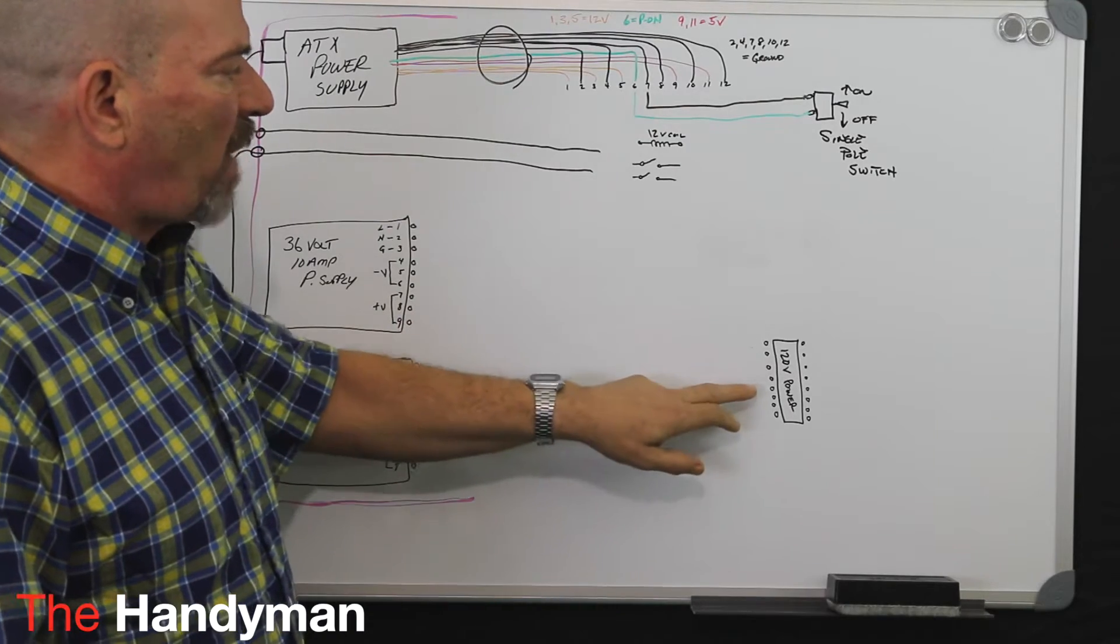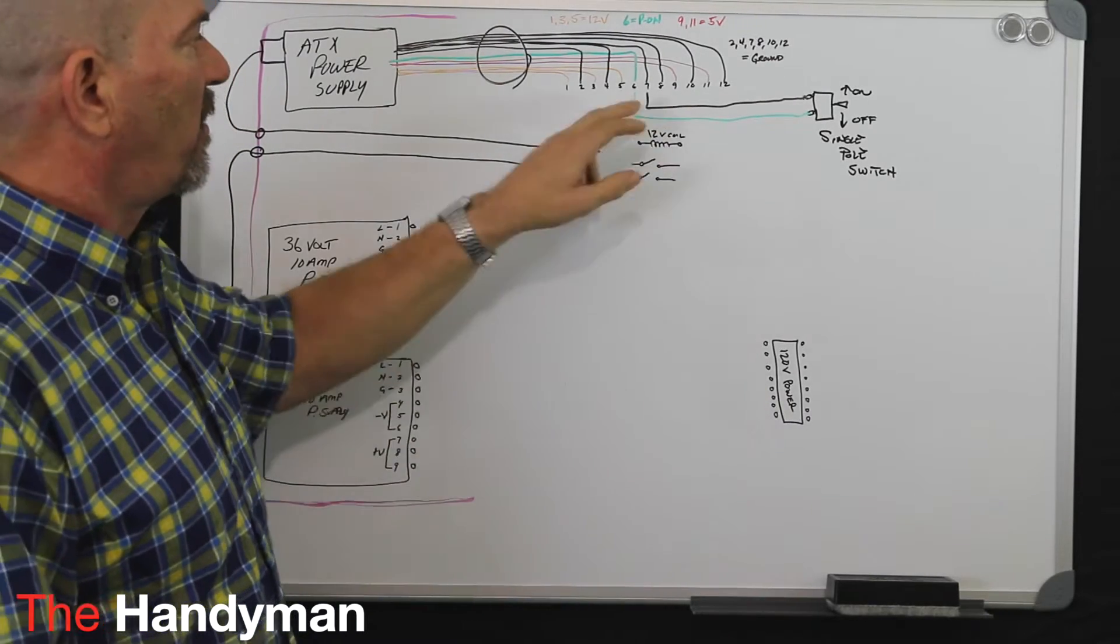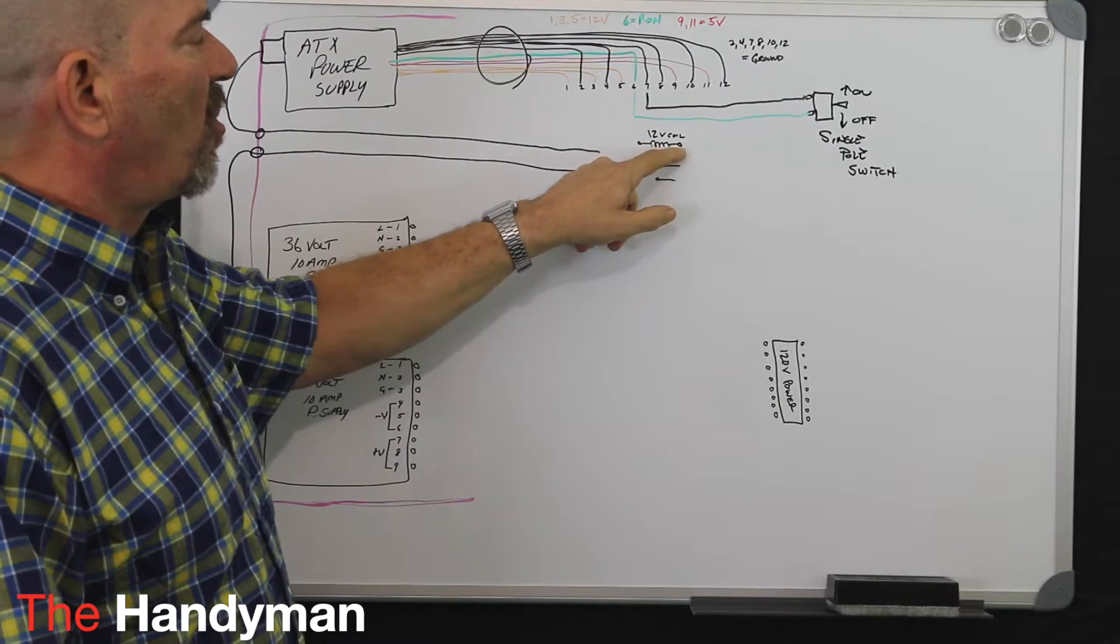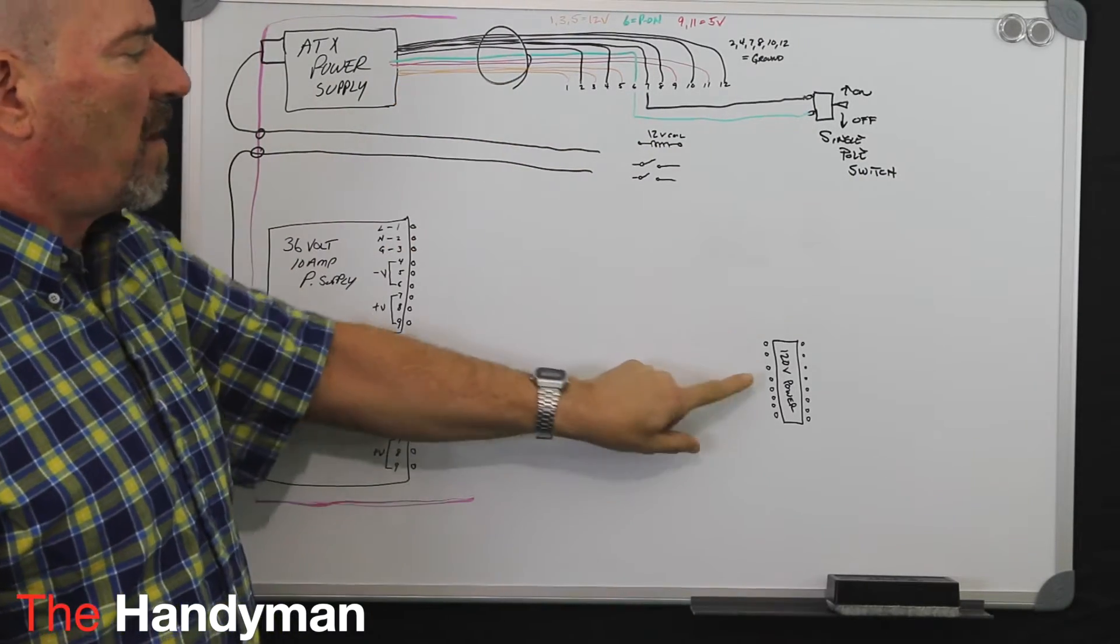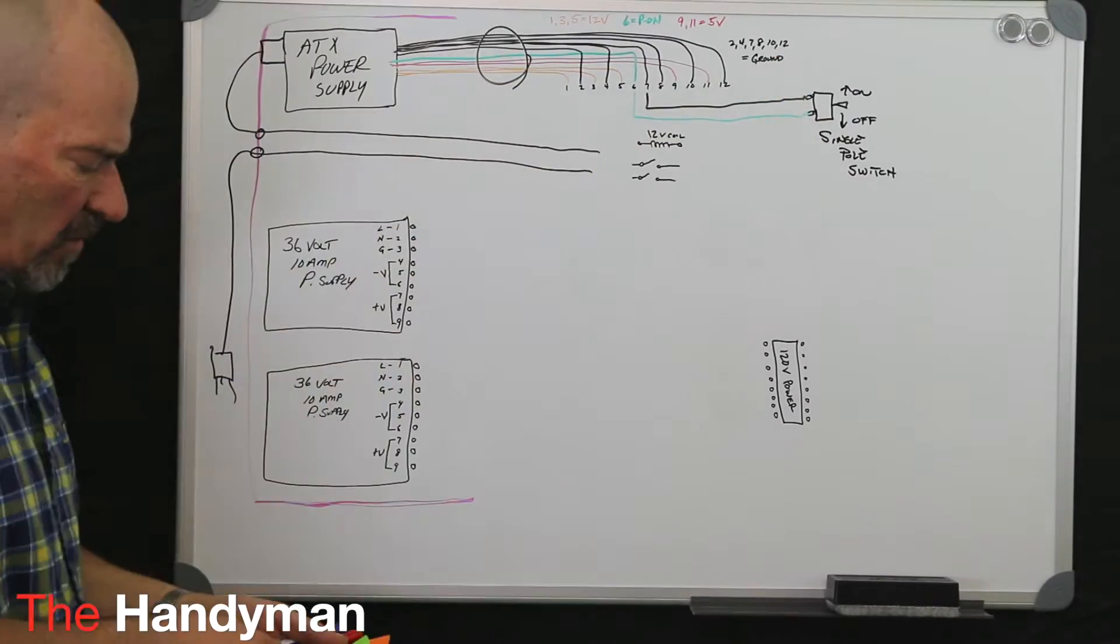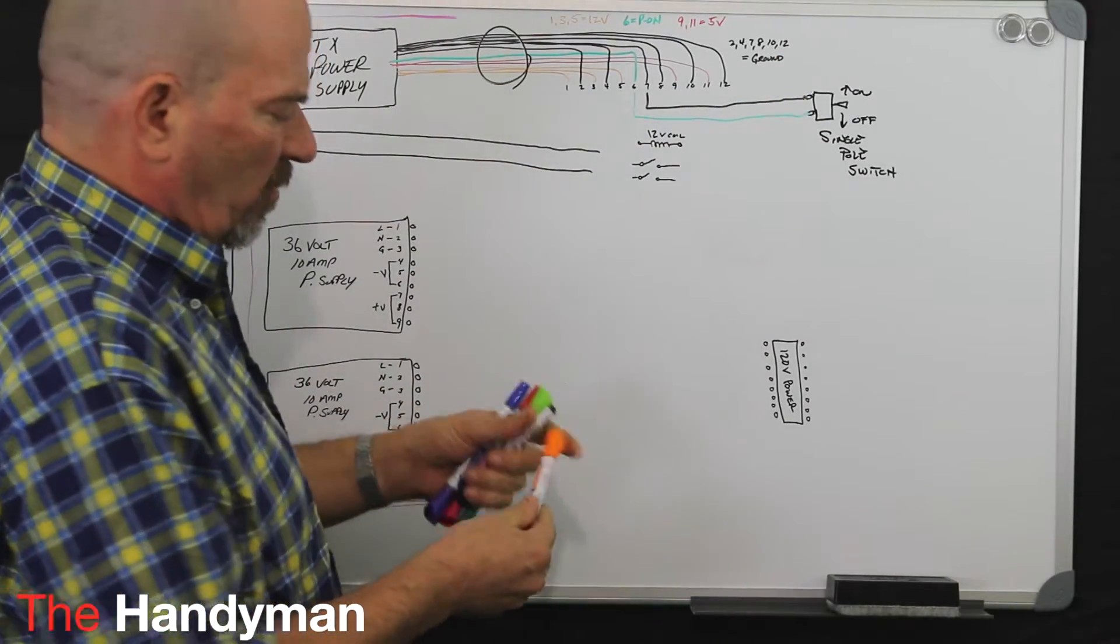We're going to use that to power up this power strip, because we're going to energize this coil off an ATX power supply and we don't want power here until we turn this switch on.